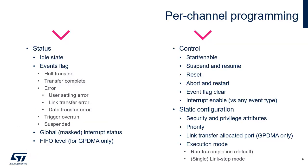This slide describes the per-channel programming features. Status information visible to software includes: idle state, event flags, global masked interrupt status, and FIFO level for GPDMA. Control information includes a software start enable, the capability of suspending and resuming a channel, resetting a channel, and aborting and restarting a channel, as well as event flag clearing and interrupt masking.